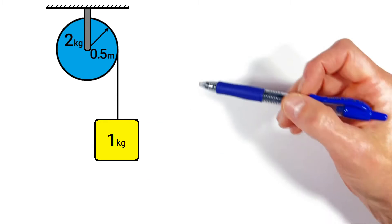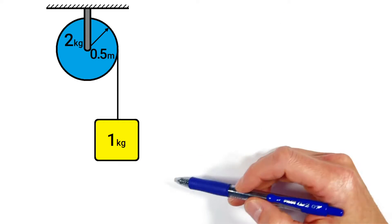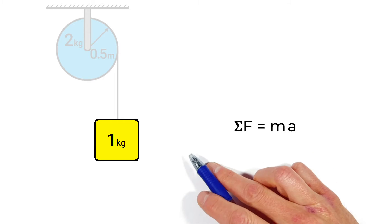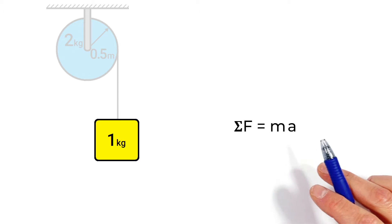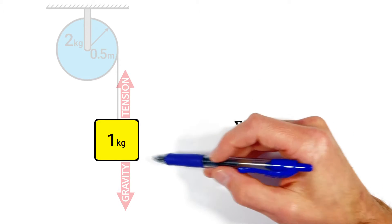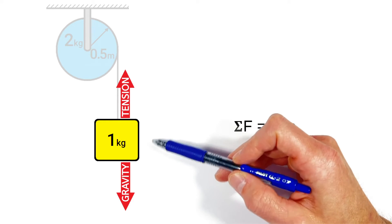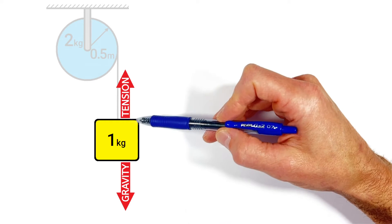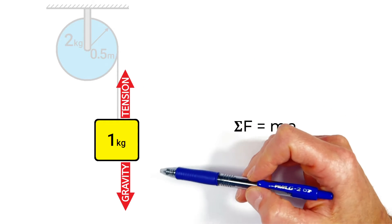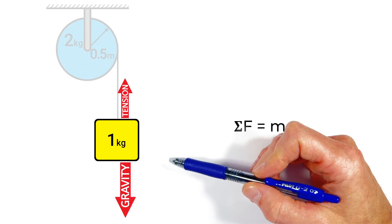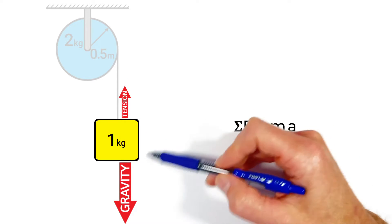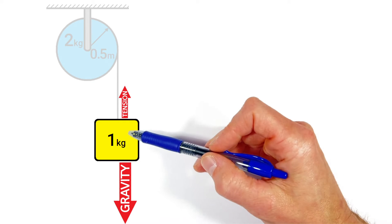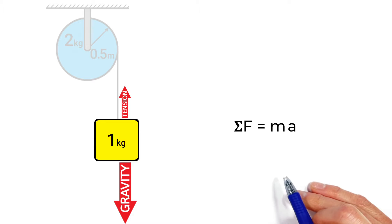We're going to apply Newton's second law to each individual object, starting with the block. Newton's second law says the sum of all forces acting on an object equals that object's mass times acceleration. Looking at the free body diagram of this block, there are two forces acting on it: gravity acting downward, and the tension in the string. The key idea here is that these two forces cannot be equal in magnitude — if they were, the block wouldn't accelerate downward.